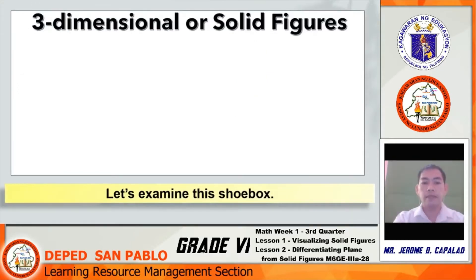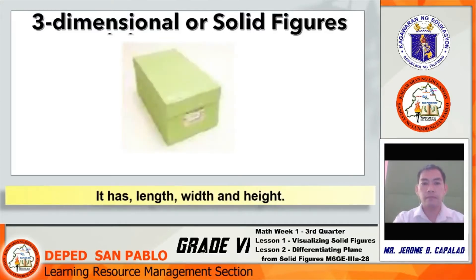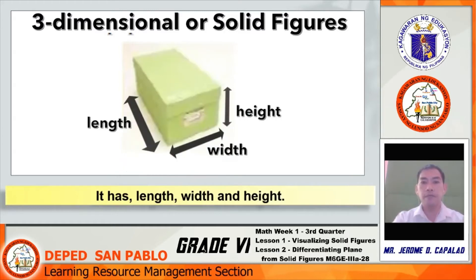Let us examine this shoebox. It has length, width, and height. That's why it is called a three-dimensional figure — with the three dimensions namely length, width, and height.